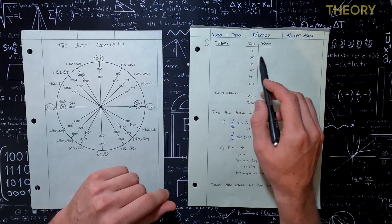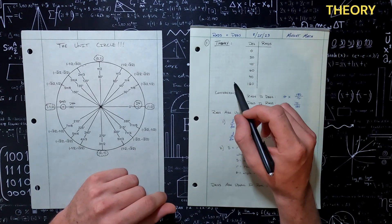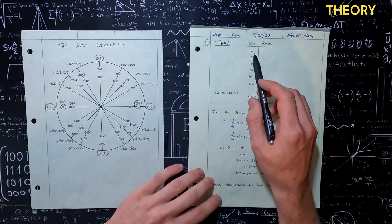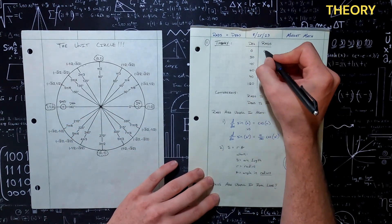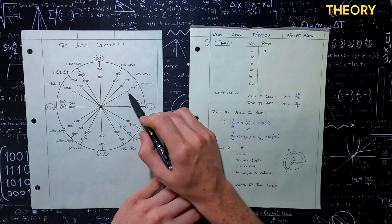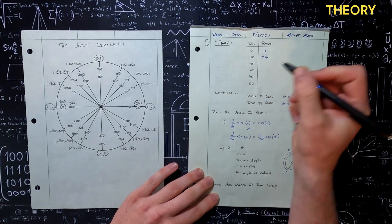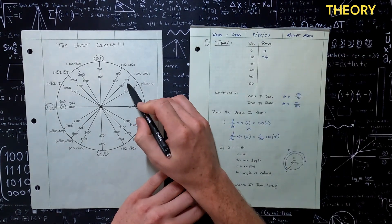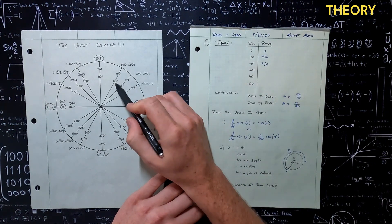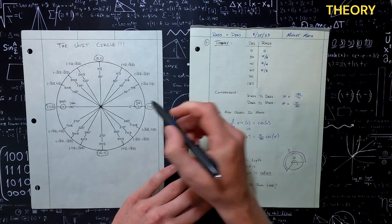With that being said, let's move over into our theory here. We're going to fill out this chart of what we have in degrees and what that would be in radians. For 0 degrees, we have 0 radians. We look at 30 degrees, we have pi over 6. At 45 degrees, we have pi over 4. At 60 degrees, pi over 3.